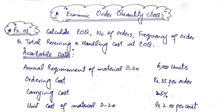First, calculate Economic Order Quantity. Second, calculate how many orders to place in a year. Third, calculate frequency of order — after how many days to place an order. Fourth, find the total receiving and handling cost at the economic order size.